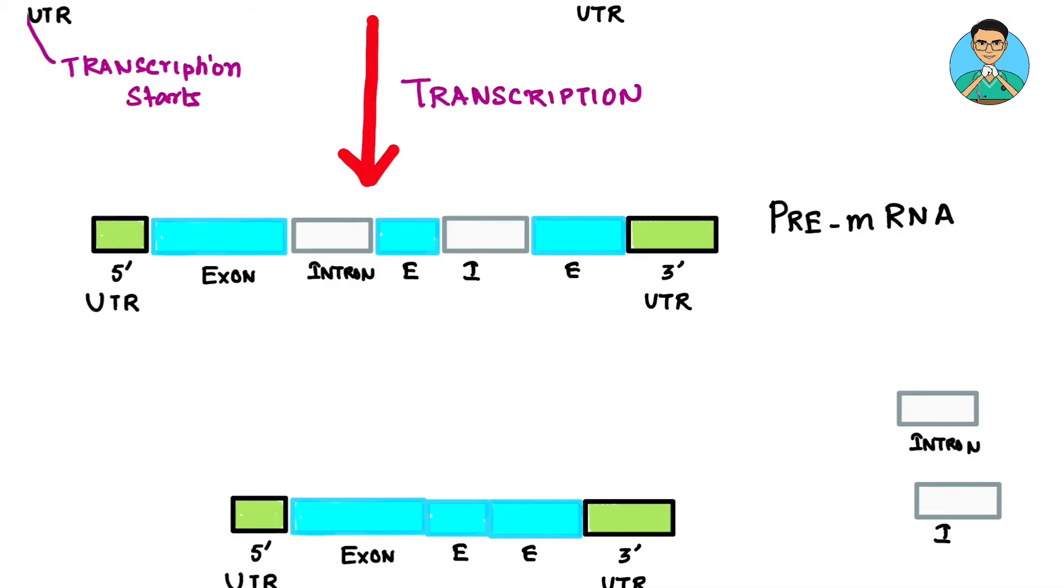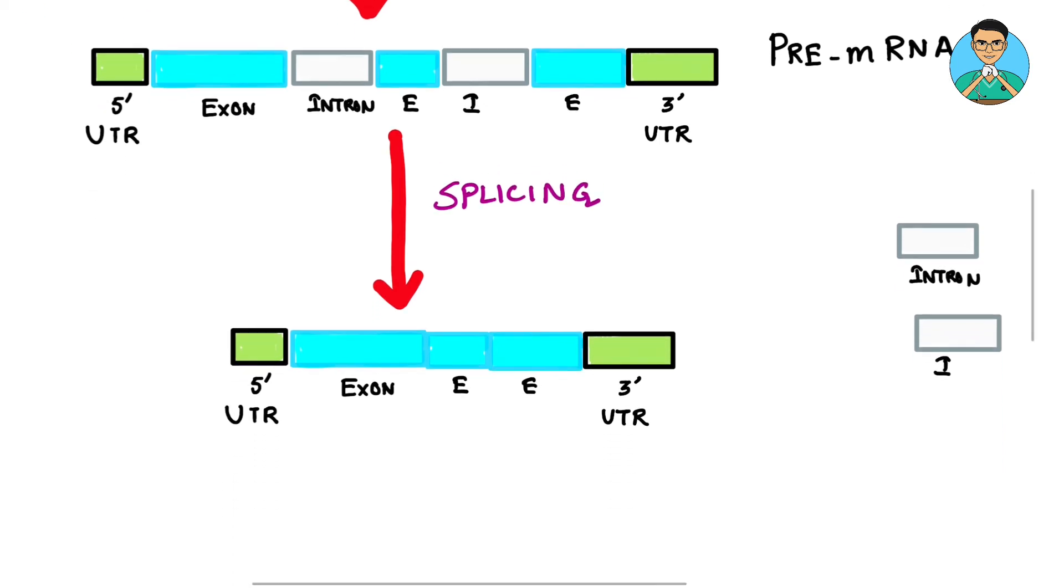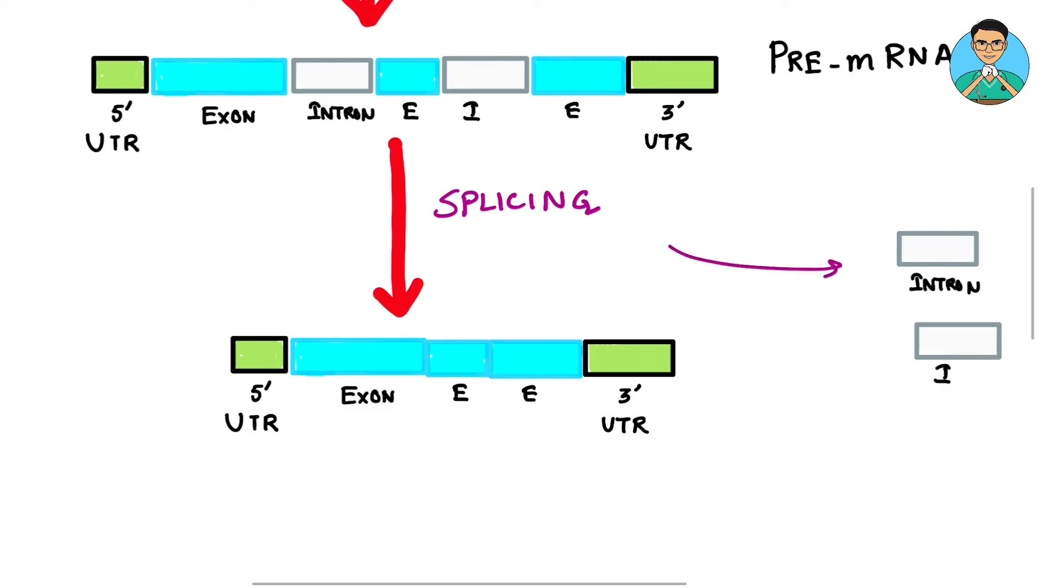Now this pre-mRNA undergoes another process which is known as splicing. In splicing what happens? The introns are removed out. And what remains is the untranslated regions on both ends and the exons together.